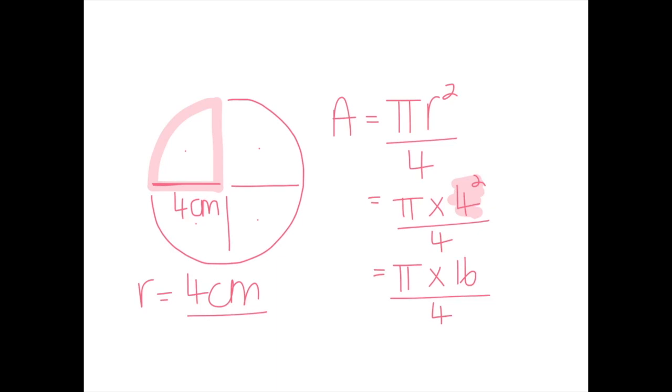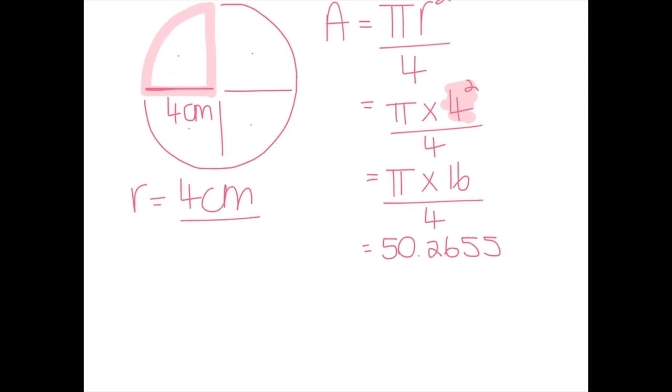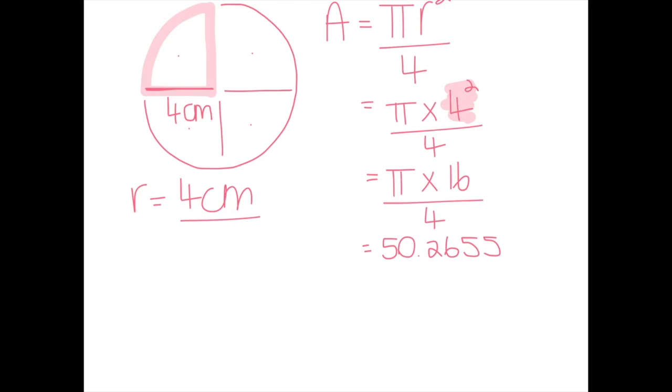Pi times sixteen, on my calculator, tells me it is 50.2655, and I've just realized that I've used the exact same number as I used for the previous example. But anyway, so it's still dividing by four, and my calculator tells me that that is twelve point five six six four.